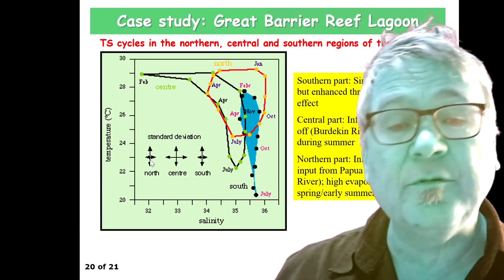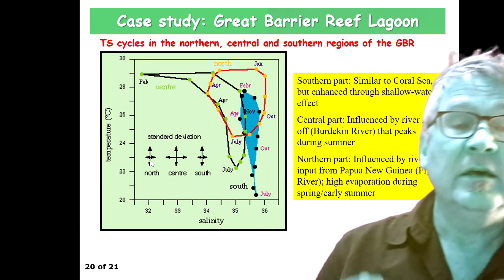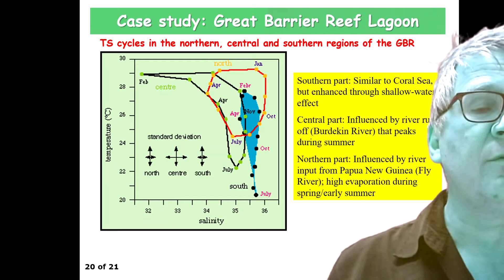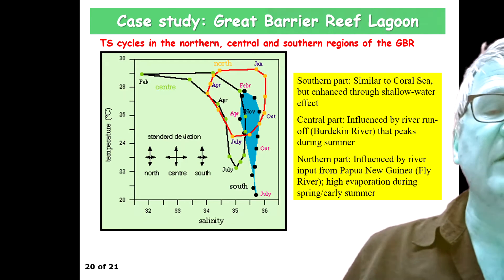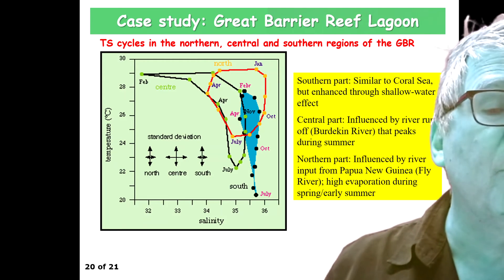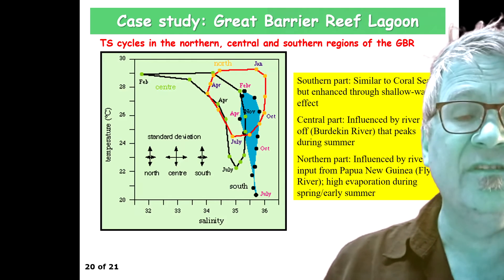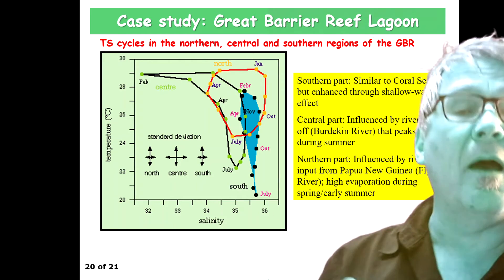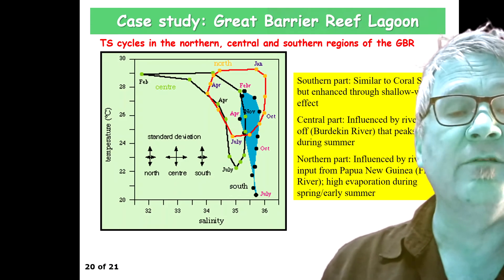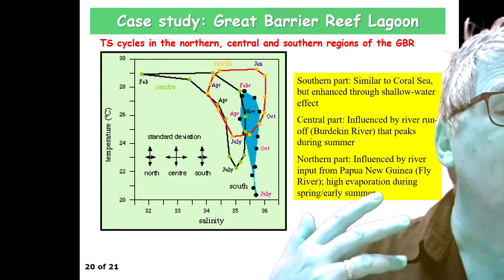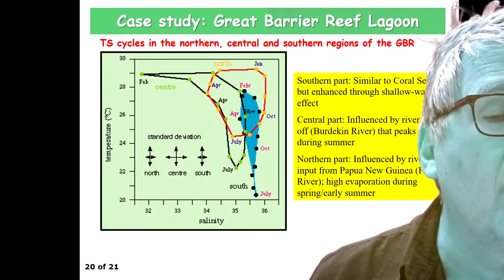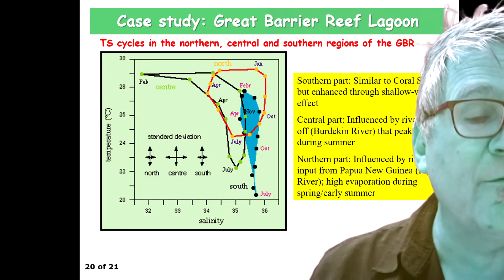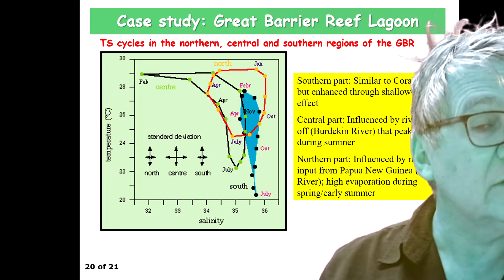The interpretation: the southern part is similar to the Coral Sea but enhanced through the shallow water effect. The central part is influenced by river runoff — the Burdekin River — that peaks during summer, producing the big spike in low salinity water in February. The northern part is influenced by river input from Papua New Guinea, the Fly River, and high evaporation during spring and early summer.